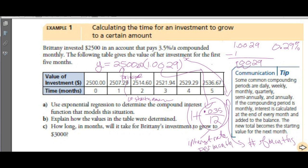She's getting 0.035 divided by 12, which works out to 0.0029 — that's the monthly rate. She's getting 3.5% a year but since they're paying monthly, they give her 1/12 of the interest rate because there are 12 months in a year.